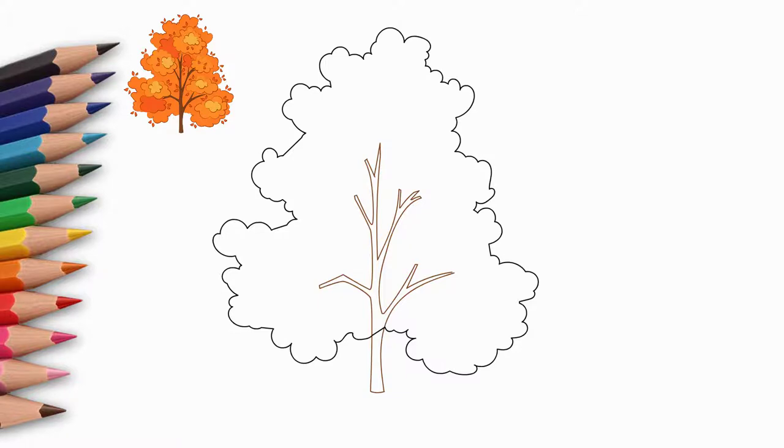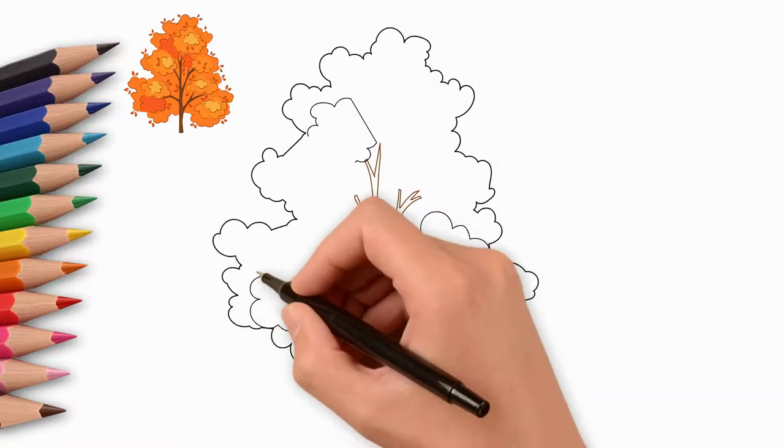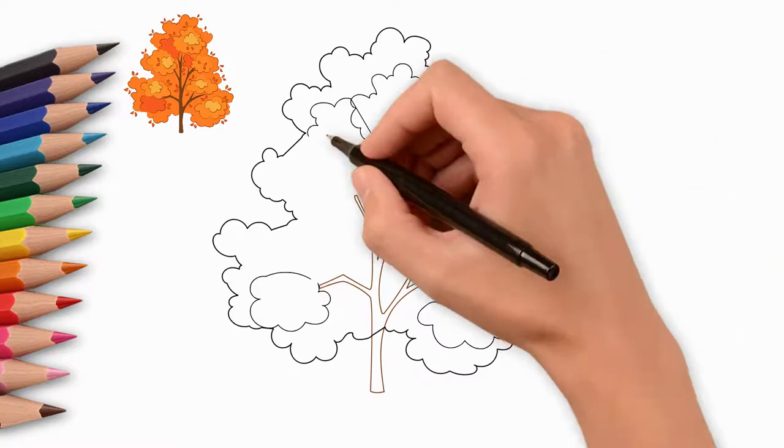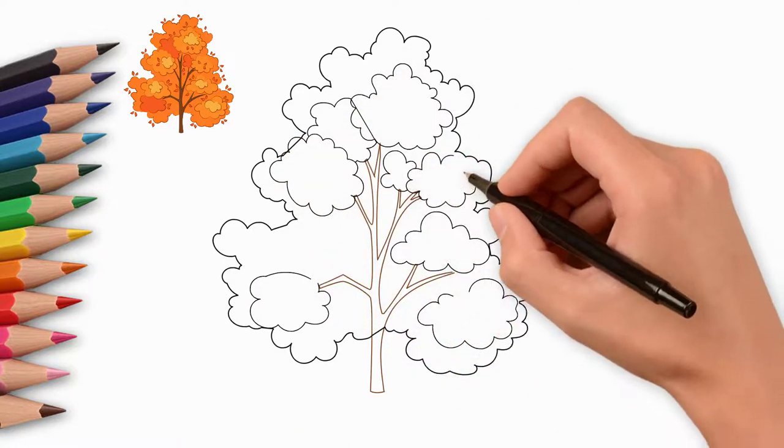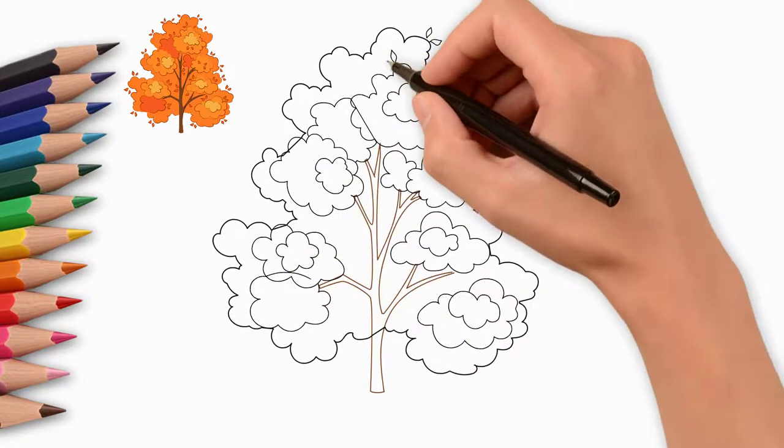Now draw the crown of the tree. Draw leaves around the trunk and branches. Then draw a lot of small details. Draw leaves on the branches, draw many leaves.